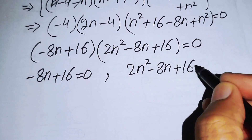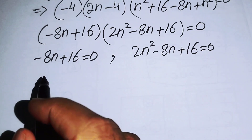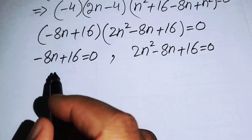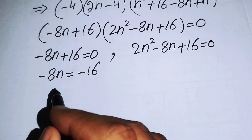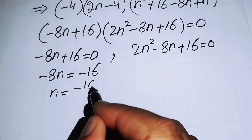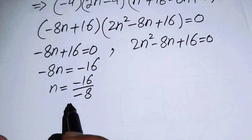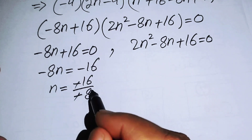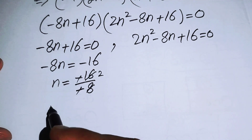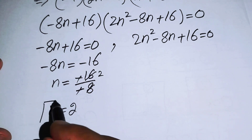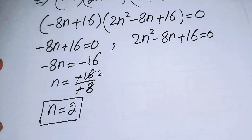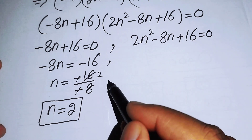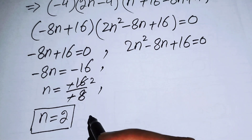In Case 1, we solve 2n minus 4 equals 0. Moving 4 to the right hand side gives minus 8n equals minus 16, so n equals minus 16 over minus 8. The negatives cancel and we get n equals 2. This is the first real root of the equation.